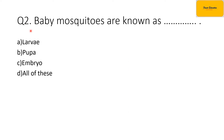The second question is: baby mosquitoes are known as dash. The options are A, larva; B, pupa; C, embryo; and D, all of these. The correct option is option A — baby mosquitoes are known as larva.